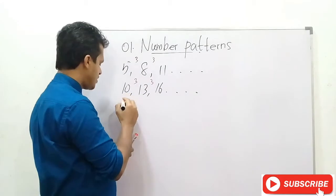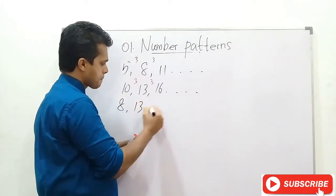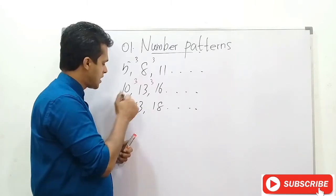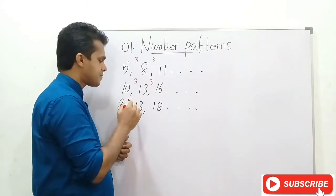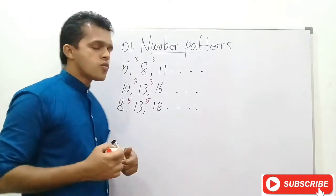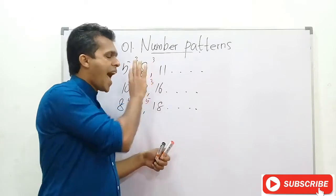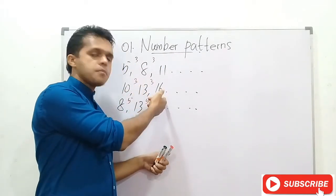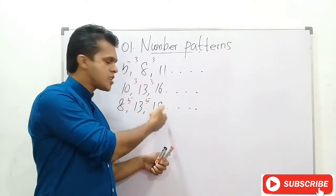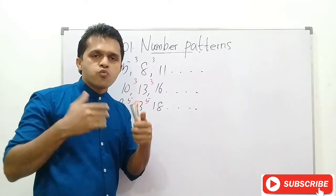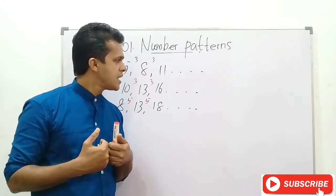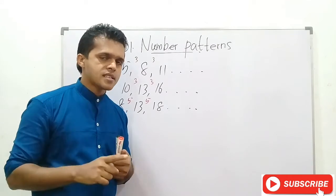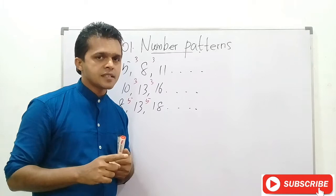Now let's take this number sequence and find the relation between digits. 8 plus 5 is 13, and 13 plus 5 is 18. Here, 3 is considered the common difference of that number sequence, and 5 is the common difference of this one. So now we are going to learn about common difference.